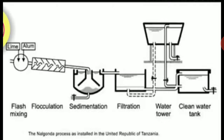Defluoridation is the removal of excess fluoride from the water. Some excess percentage of fluoride may be present in the water that should be removed. The desirable limit of fluoride is 1 ppm and the permissible limit is 1.5 ppm. The fluoride level should be less than 1 ppm, and in worst conditions up to 1.5 ppm can be acceptable.